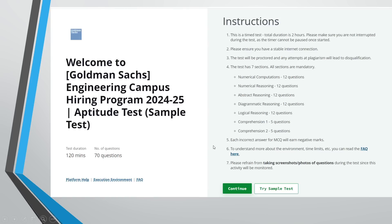This is the interface you will get when you open the sample test. Some candidates received the sample test mail; some did not — that is okay. If you get the sample test, attempt it; if not, no problem. The sample test had 70 questions with a duration of 120 minutes (two hours). Make sure you are not interrupted during the test as the timer cannot be paused once started. The sample test was also proctored, requiring a stable internet connection. Any attempt at plagiarism will lead to disqualification.